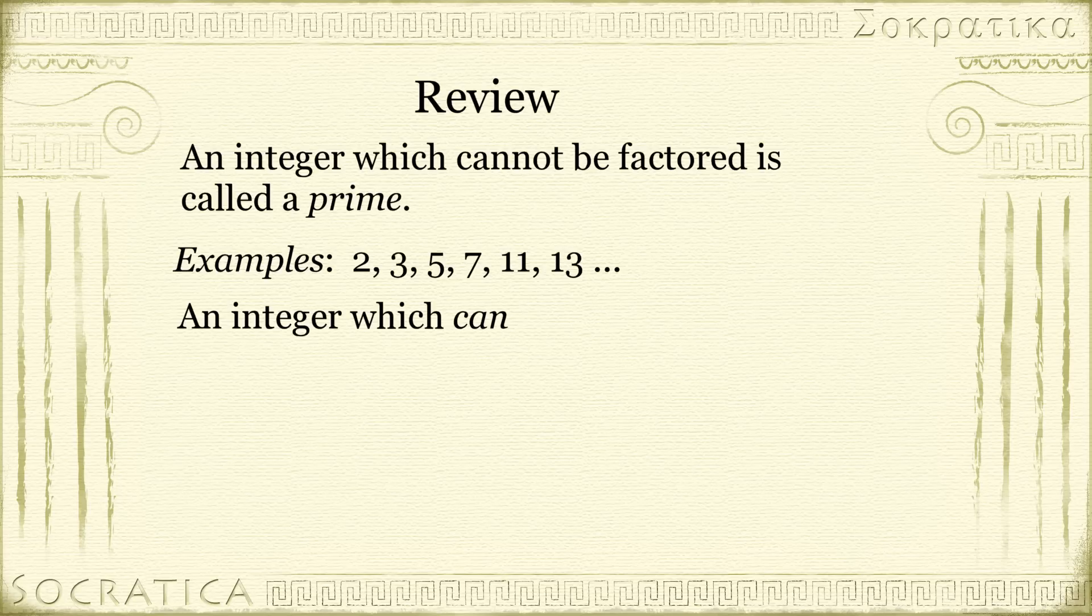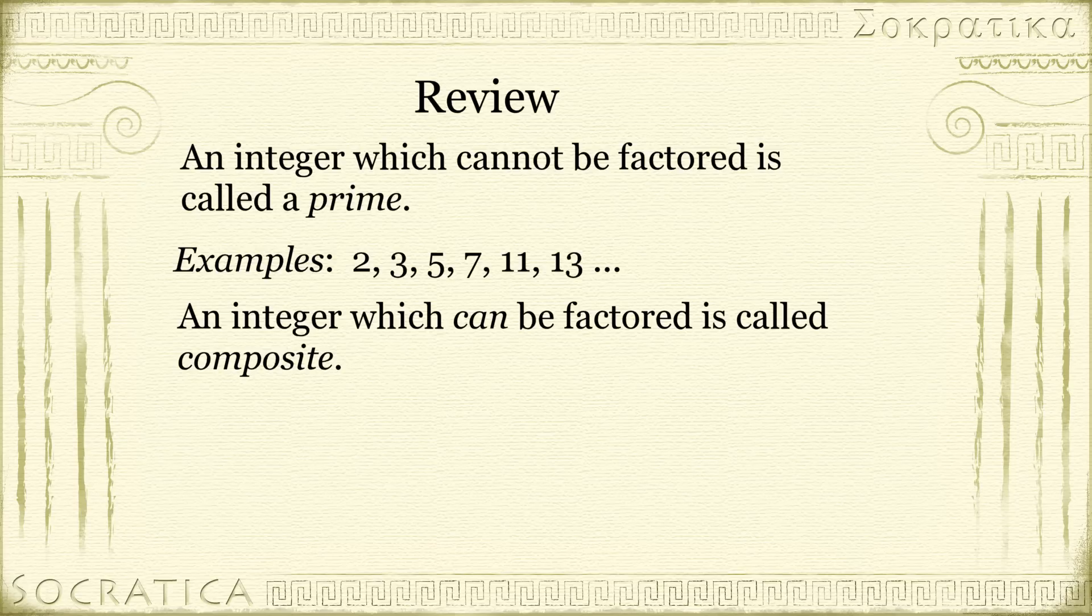An integer which can be factored is called composite. That's because they're composed of prime numbers.